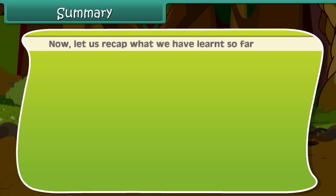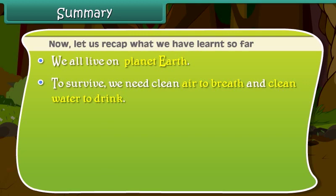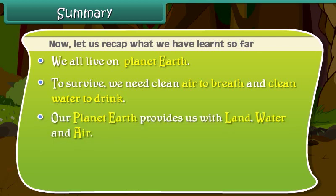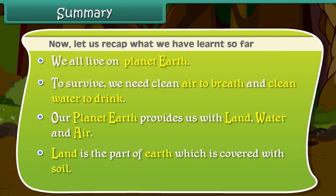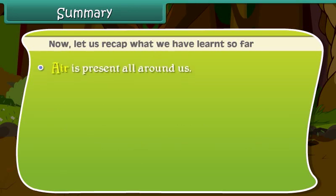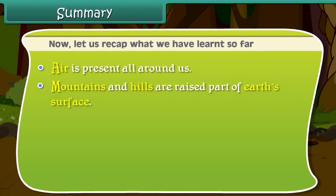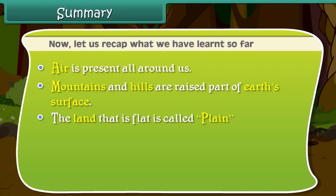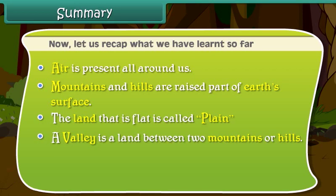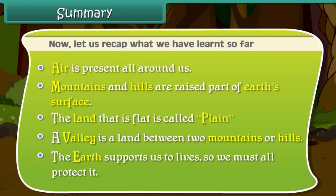Now let us recap what we have learned so far. We all live on planet Earth. To survive, we need clean air to breathe and clean water to drink. Our planet Earth provides us with land, water and air. Land is the part of Earth which is covered with soil. Air is present all around us. Mountains and hills are raised parts of Earth's surface. The land that is flat is called plain. A valley is a land between two mountains or hills. The Earth supports us to live, so we must all protect it.